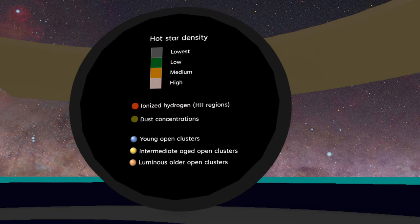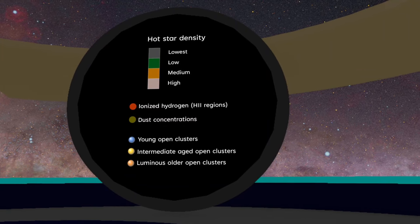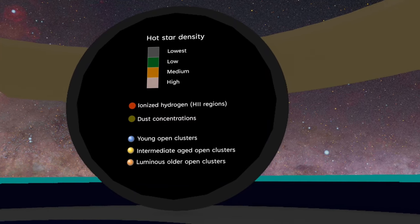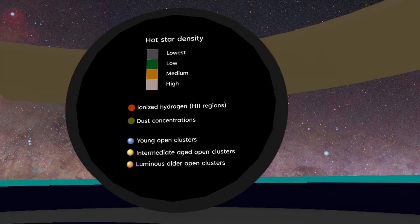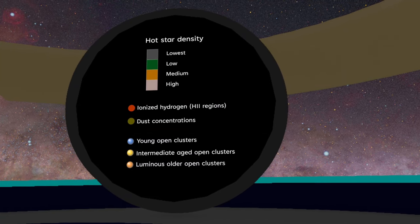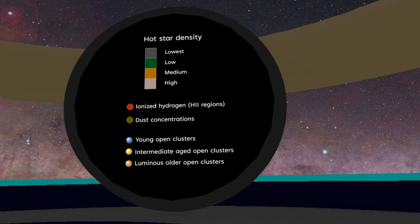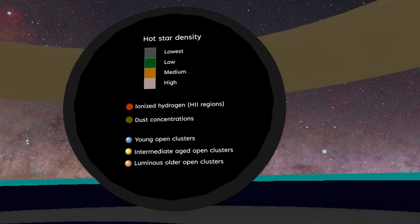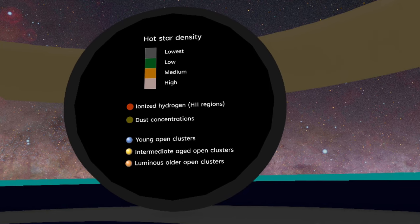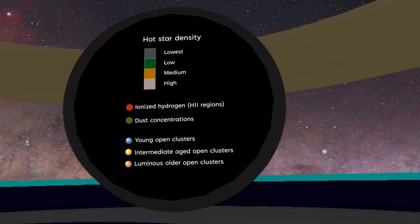We can borrow many of the mapping techniques used by terrestrial cartographers to map the Milky Way. Instead of elevation, we can map hot star density. Instead of mountain ranges, we can map vast chains of dust clouds. Instead of cities and towns, we can map star clusters and regions of ionized hydrogen gas.